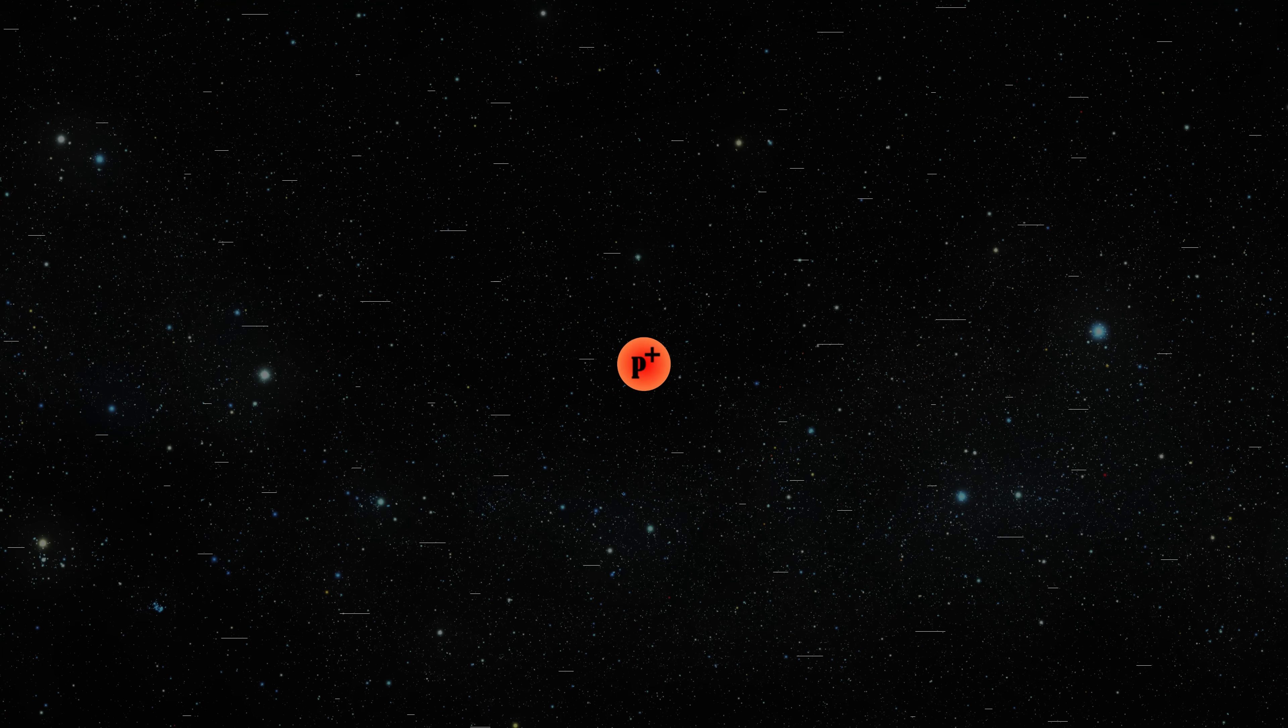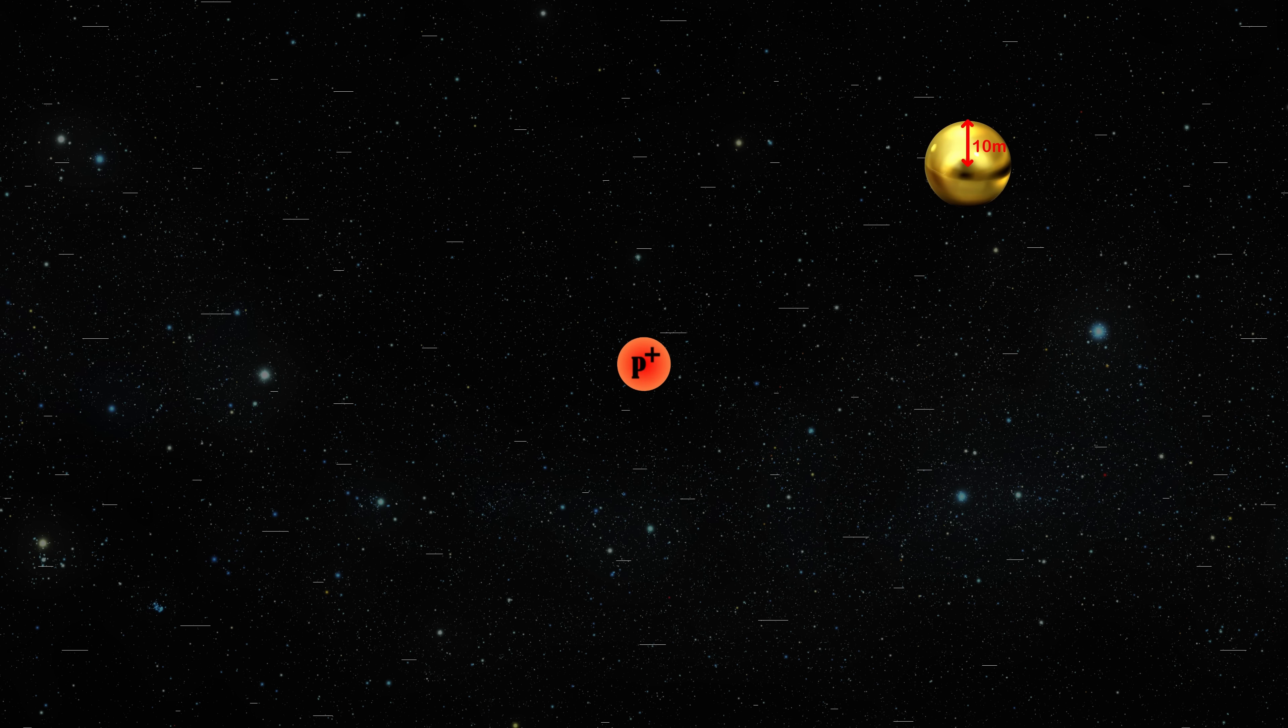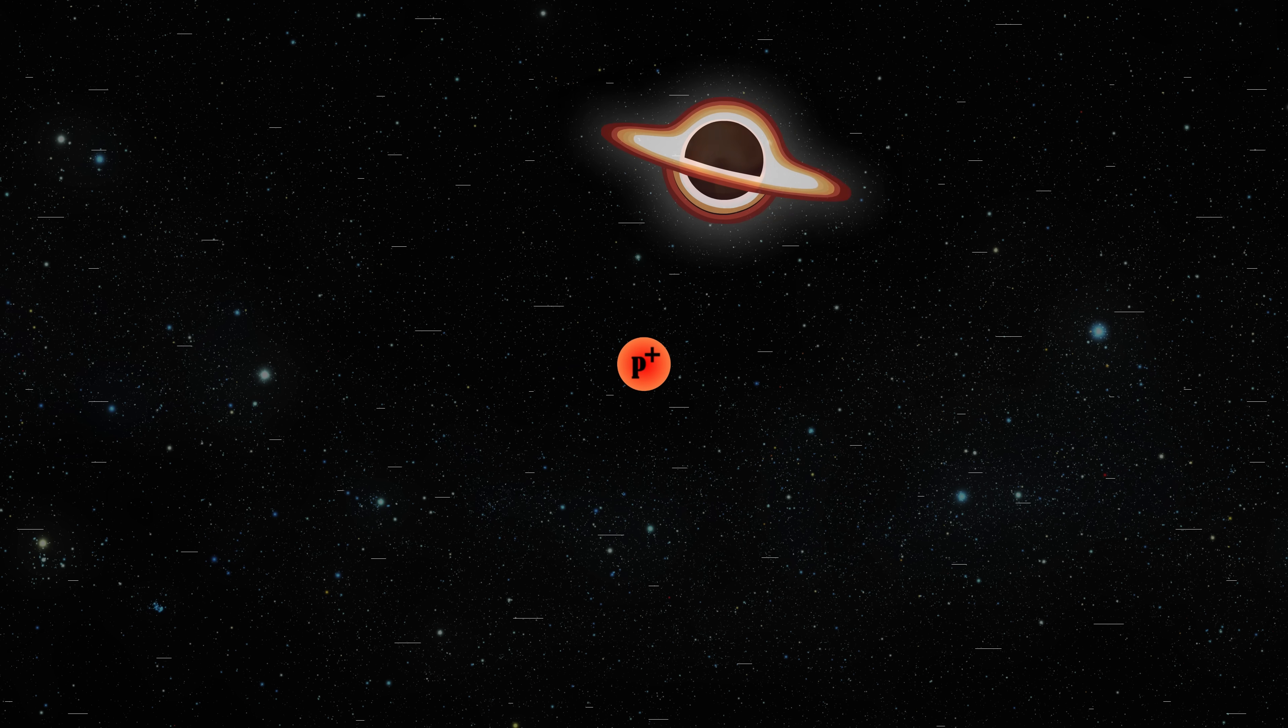But this doesn't save us from the underlying issue. Because special relativity also teaches us that all inertial frames are equal. And we can treat each inertial frame as stationary one and every other as moving. So from the reference frame of the fastest proton in the universe, it would take a metal ball with a radius of 10 meters to turn it into a black hole.